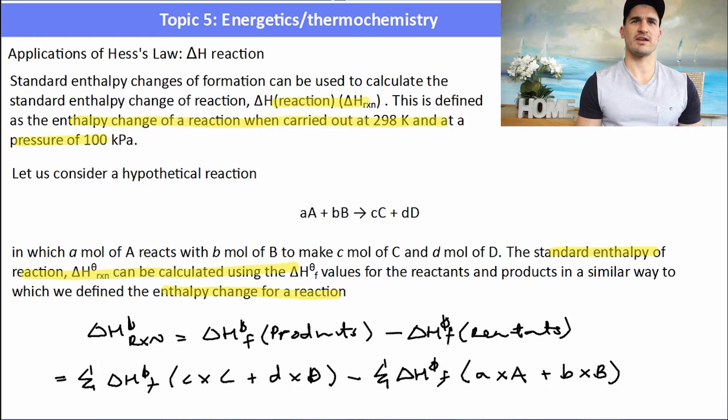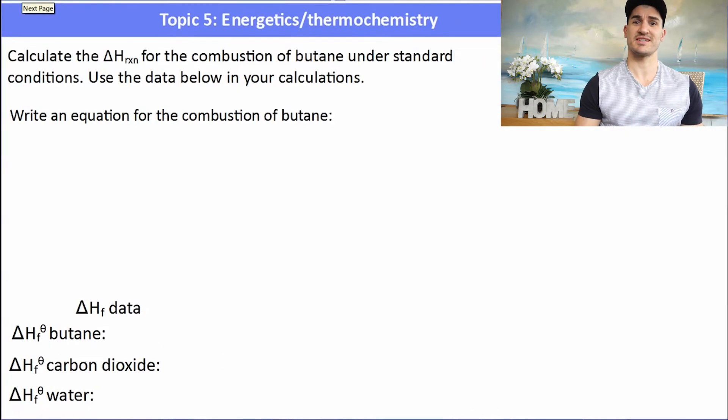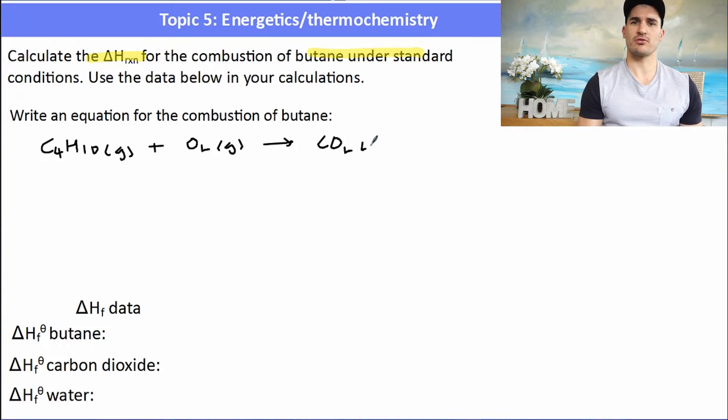So calculate the delta H of reaction for the combustion of butane under standard conditions. Standard conditions tells me that they want me to use 298 Kelvin and 100kPa. So the first thing we need to do is write a combustion reaction for butane. So butane C4H10, if you didn't know the formula, refer to the data book, plus O2 goes to CO2 plus H2O. Now we've got to go through and balance this, so we'll apply the CHOD carbon, hydrogen, oxygen, and then D for double. So I have four carbons, I need five waters, that's going to give me an odd number of oxygens, which in this case will be okay, and then I have my 13 over 2 oxygens.